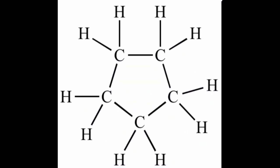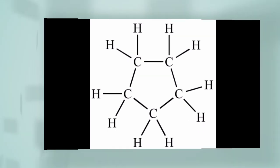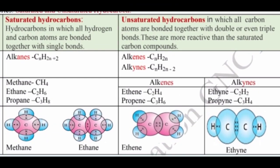Question 3: Write the molecular formula of cyclopentane and draw its bond structure. The molecular formula is C5H10, and its structure is shown here. Difference between saturated and unsaturated hydrocarbons: Saturated hydrocarbons are those in which all hydrogen and carbon atoms are bonded with single bonds — examples include alkanes.